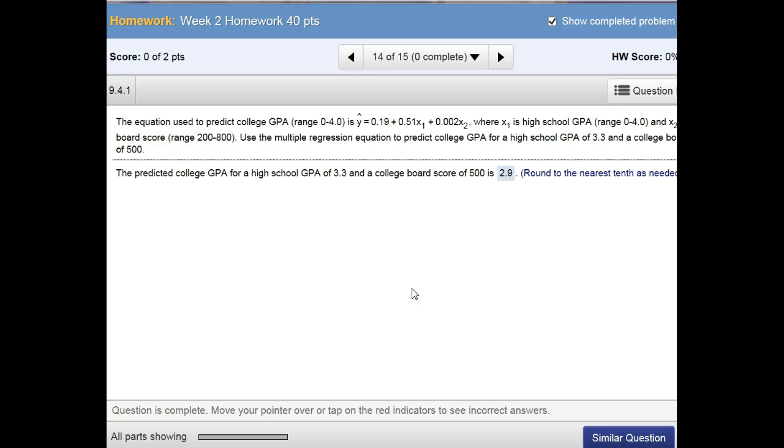It says the equation used to predict college GPA, range 0 to 4.0, is y equals 0.19 plus 0.15 times x sub 1 plus 0.002 times x sub 2, where x sub 1 is a high school GPA and x sub 2 is a college board score anywhere between 200 and 800. Use the multiple regression equation to predict a college GPA for a high school GPA of 3.3 and a college board score of 500.